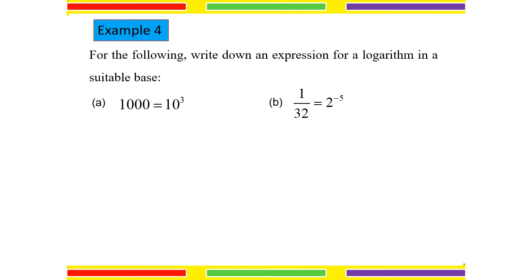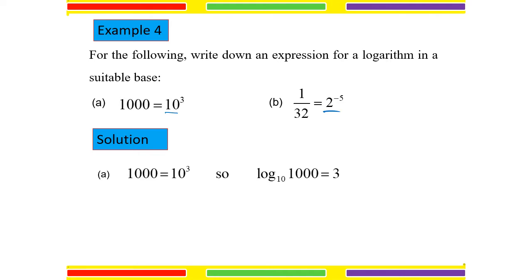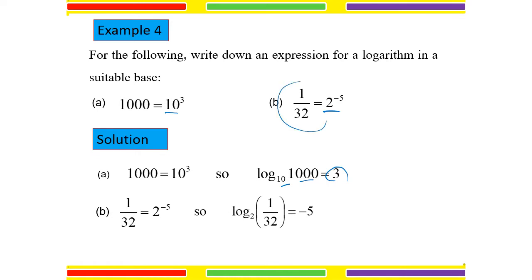Let's do some examples. For the following, write down an expression for a logarithm in a suitable base — we just have to change the exponent form into logarithm form. The base for A is 10, the base for B is 2. The answer for A: log to the base 10 of 1000 equals 3. For question B: log to the base 2 of 1 over 32 equals negative 5. So we go from exponent to logarithm.